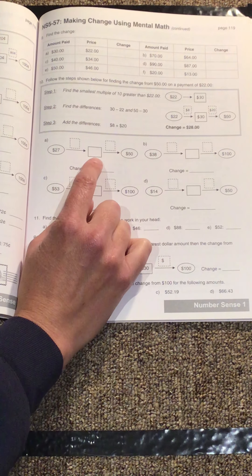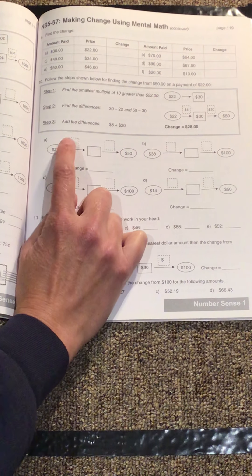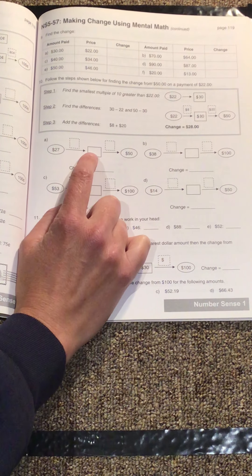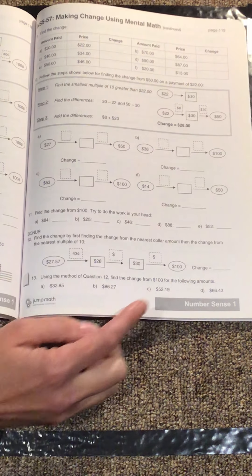All right, so counting up, 27, 28, 29, 30 would be the next one. So you'd write 30 in this box. Figure out how many steps it took to get there in here. Count up by 10s and write the amount there, add them together. That's how much change you would give.